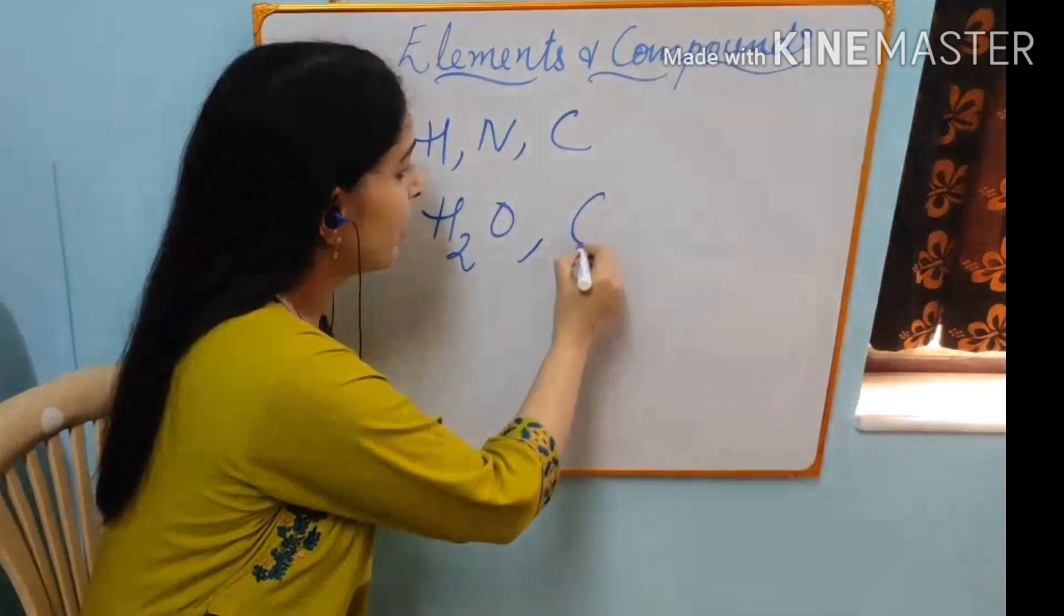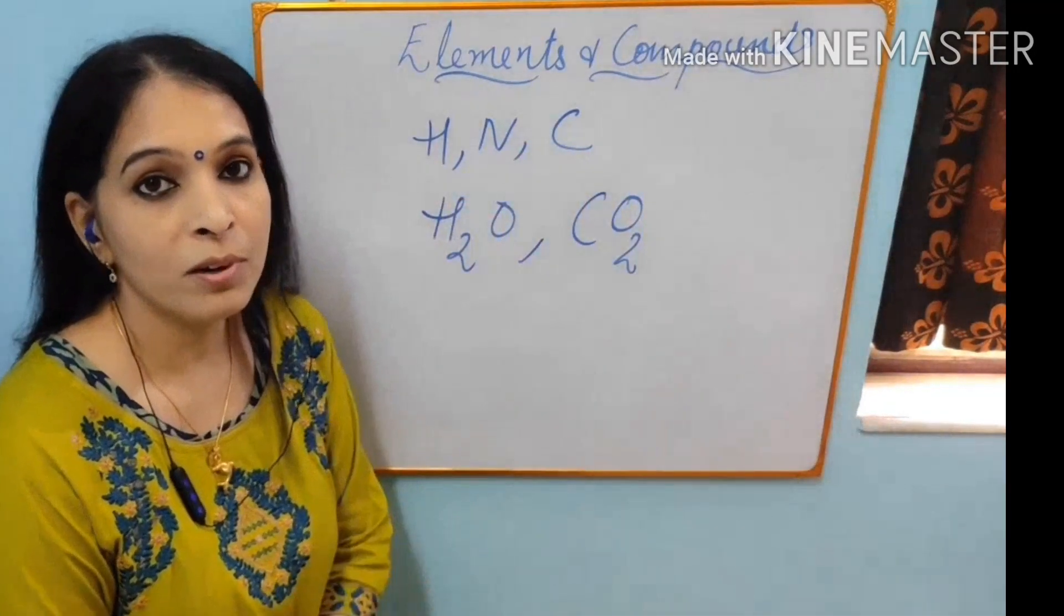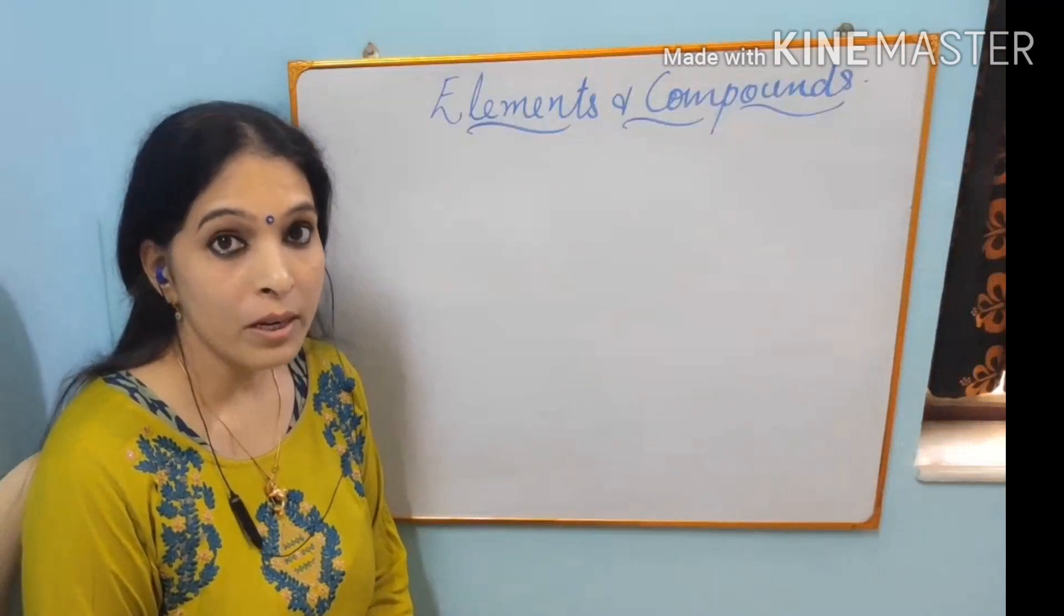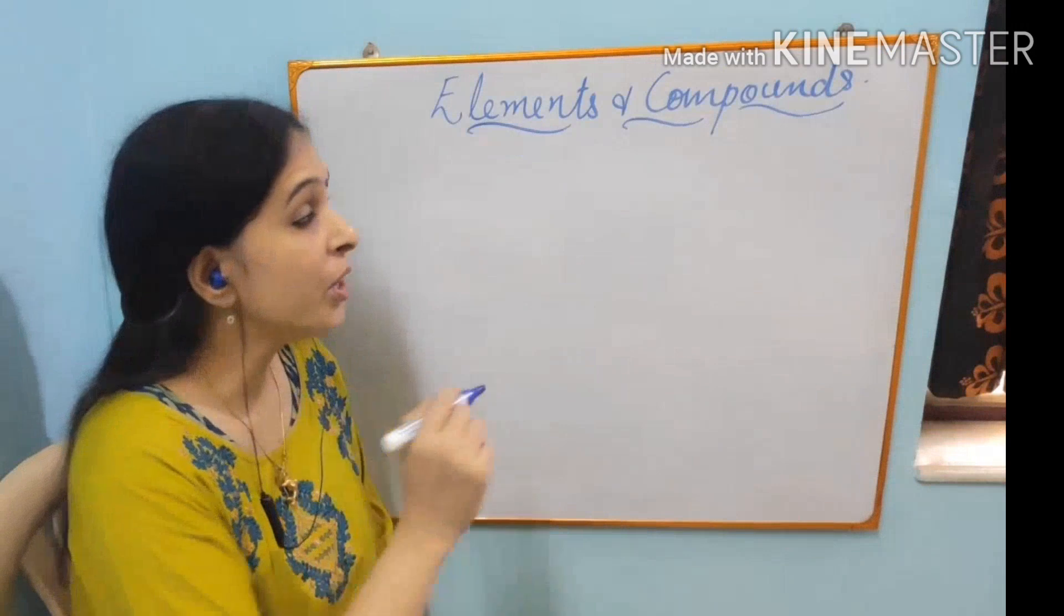Another example is carbon dioxide. Carbon and oxygen combined to form carbon dioxide. Let us see how elements are bonded to form compounds. Today, I will explain ionic bonds.